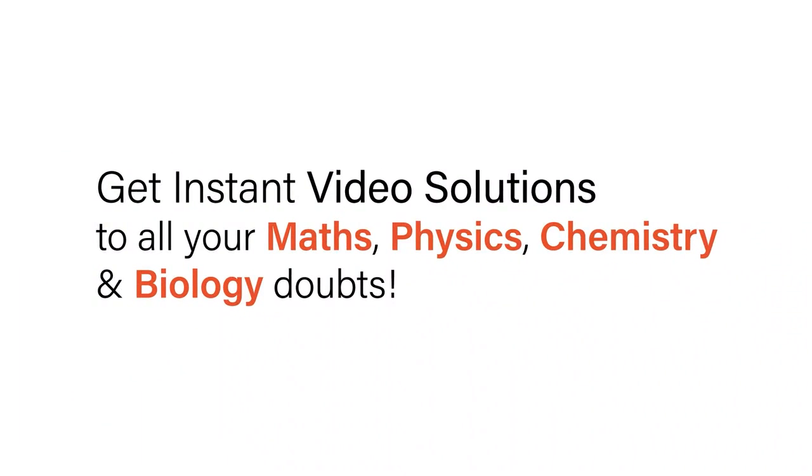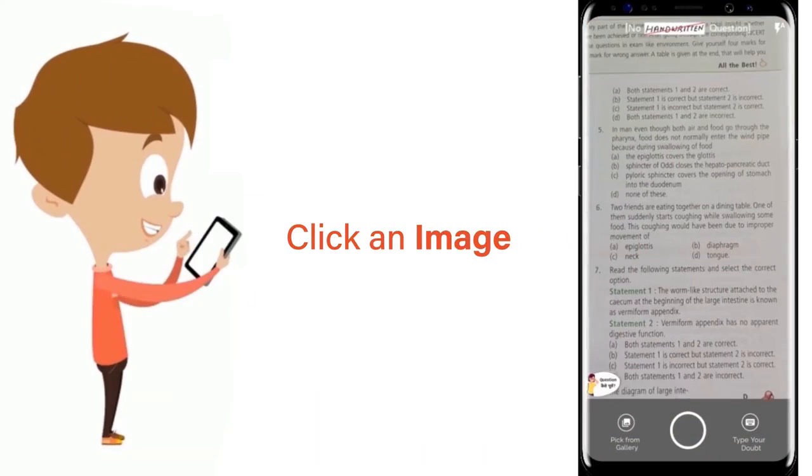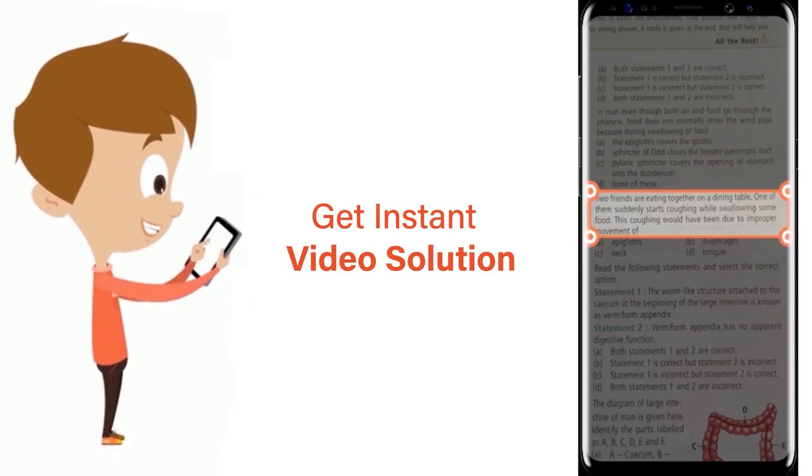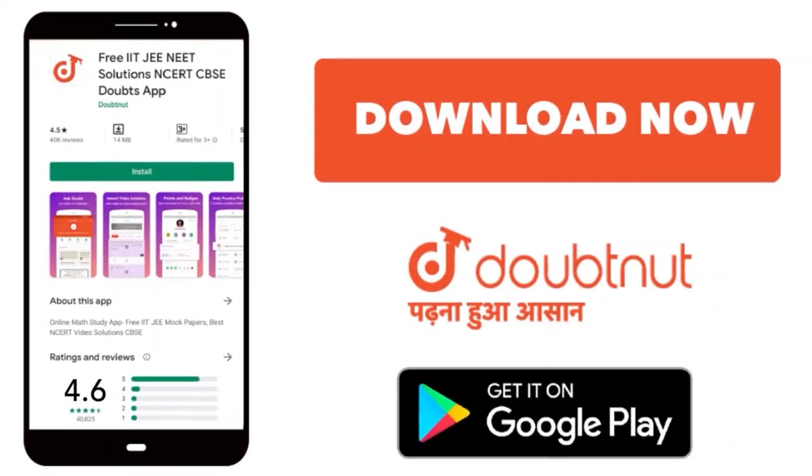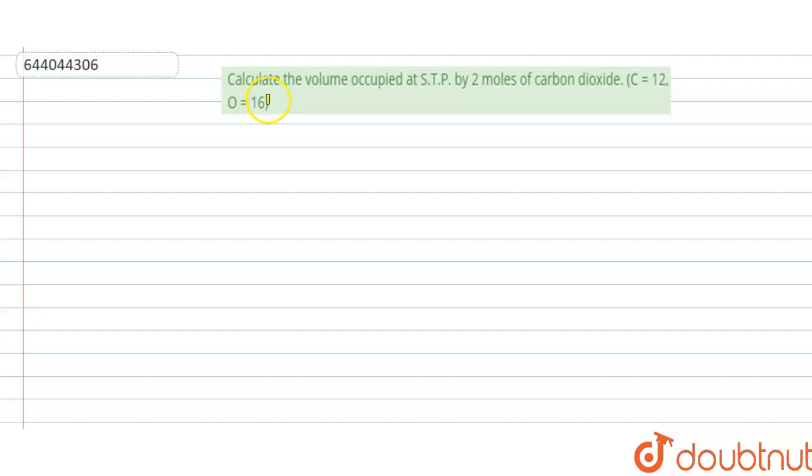With Doubtnet, get instant video solutions to all your math, physics, chemistry, and biology doubts. Just click the image of the question, crop it, and get an instant video solution. The question says: calculate the volume occupied at STP by 2 moles of carbon dioxide. The masses are given: carbon equals